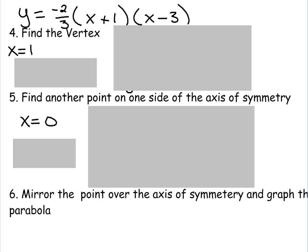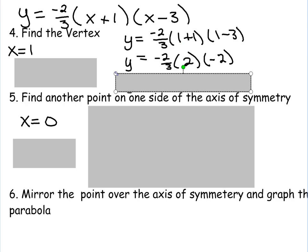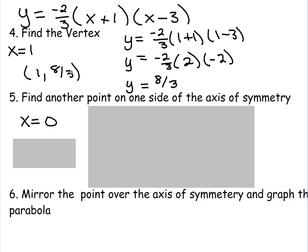Now that I have my axis of symmetry, I can use that to find my vertex. To find my vertex, I'm going to plug that one into my problem. So I have negative two-thirds times one plus one times one minus three. So you have two-thirds times two times negative two, which in this case comes out to be eight-thirds. So my vertex is at one, eight-thirds.